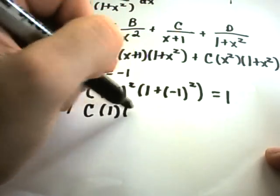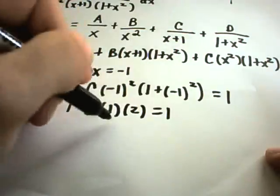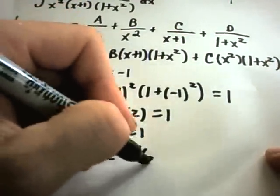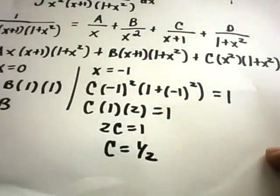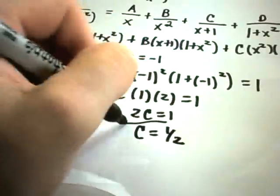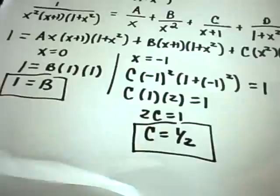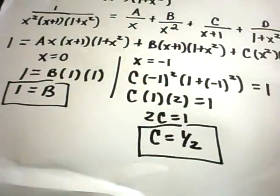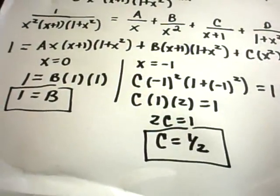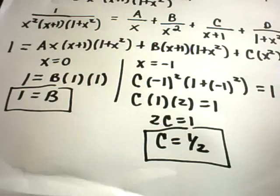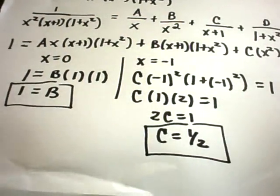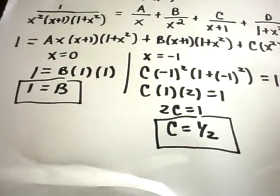Then 1 plus negative 1 squared equals 1. Negative 1 squared is 1, and 1 plus 1 is 2, so we get 2c equals 1, meaning c equals 1/2. Now we have our b value and our c value. We still need to figure out a and d, so we'll need to multiply out and equate coefficients.